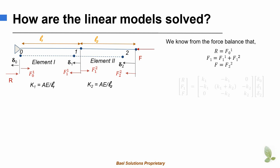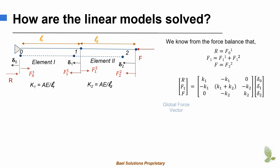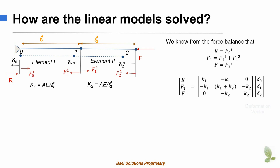This gives us the global force-deformation equation: [R, F1, F] = [[K1, -K1, 0], [-K1, K1+K2, -K2], [0, -K2, K2]] times [delta 0, delta 1, delta 2]. This 3×3 matrix is the global stiffness matrix. We can represent this compactly as F = K · delta, where F is the force vector, K is the global stiffness matrix, and delta is the global deformation vector.